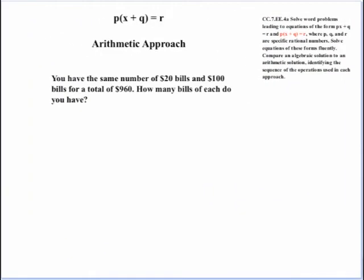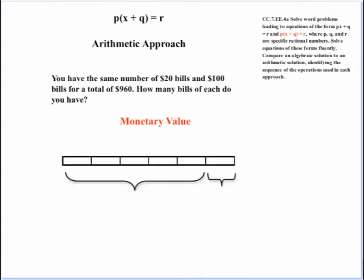Let's try one more example. And this time, let's use the form P times parentheses X plus Q close parentheses equals R. Let's start with an arithmetic approach. The problem reads: you have the same number of $20 bills and $100 bills for a total of $960. How many bills of each do you have? Now, let's suppose that some students switch over and their thinking goes to looking at the monetary value.